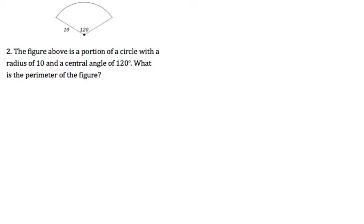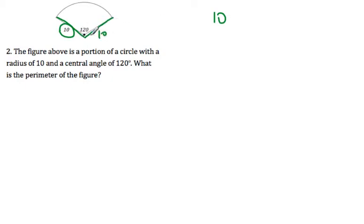We need to find the perimeter of the figure. The key thing people make mistakes on is that you need to add the whole perimeter. Here's 10, and then here's also 10, because they're both radii and all radii are equal.